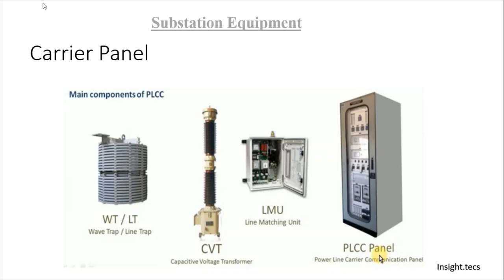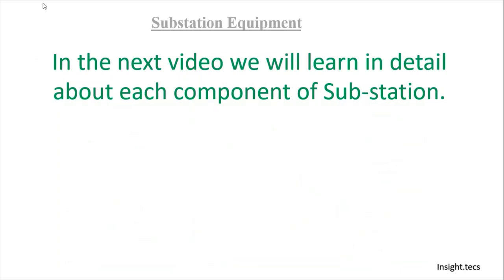The carrier panel: in previous videos, we have seen that communication is also possible through power lines. The equipment used for that includes wave trap and CVT. These resist higher frequency signals and allow only 50 Hz frequency. We use a particular power frequency for communicating between two substations — the relays communicate. To provide distance protection, we need to send a carrier signal to the opposite end substation and also receive a carrier signal from it. From the CVT (capacitive voltage transformer), the signals go into the line matching unit and from there we come to the PLCC panel. Power line carrier communication panels are also a very important part of any substation.